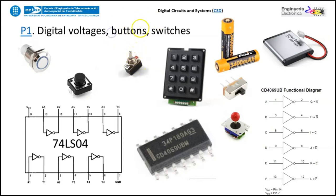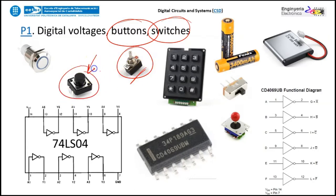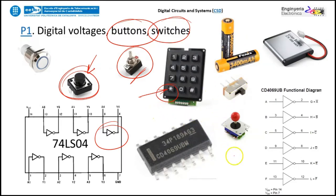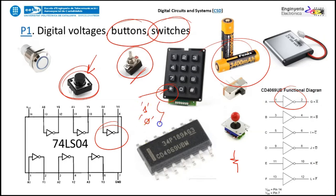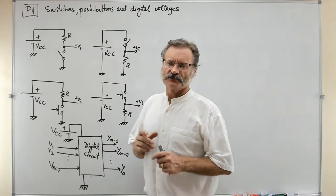Let's start the course talking about buttons and switches — the typical on-off device and the push button that you can press and release. We'll connect such devices to logic gates. These are the same devices you find in any keypad or keyboard. Using resistors, batteries, buffers, and NOT gates, we will generate the typical one and zero symbols used throughout digital circuit courses.